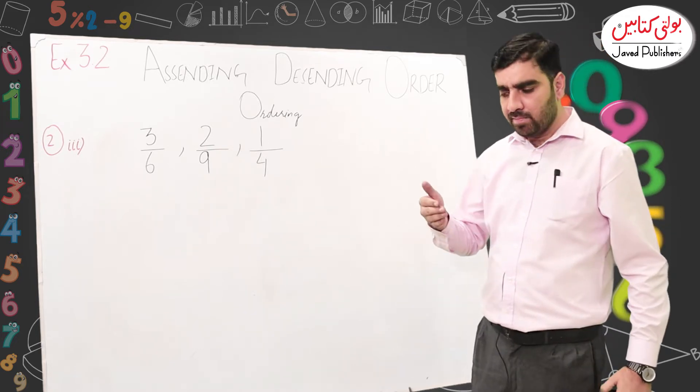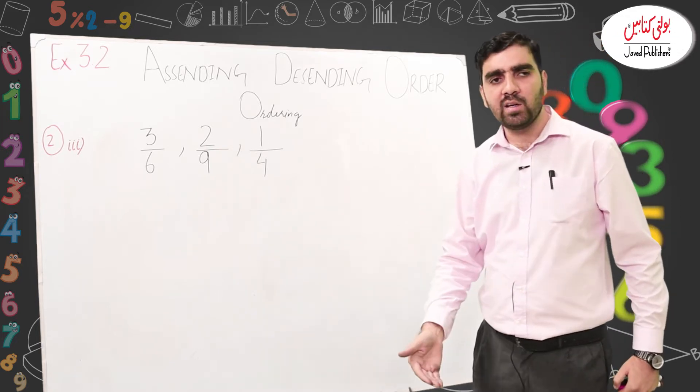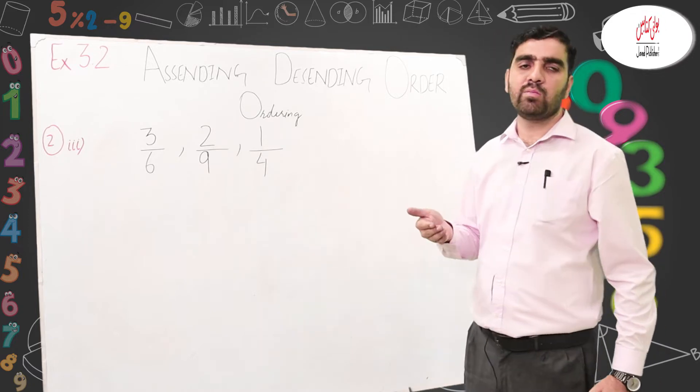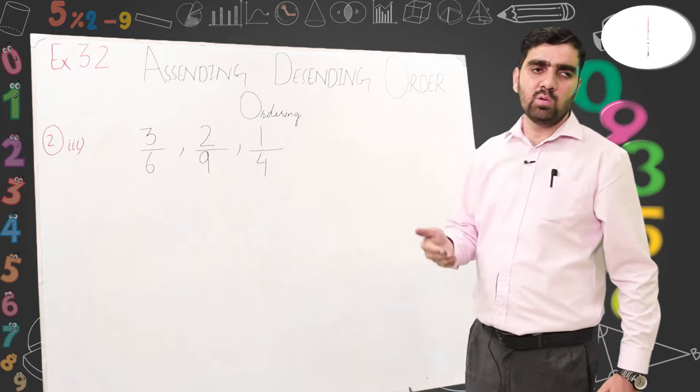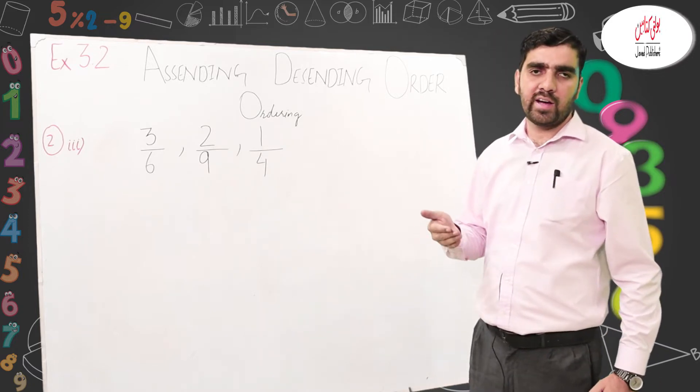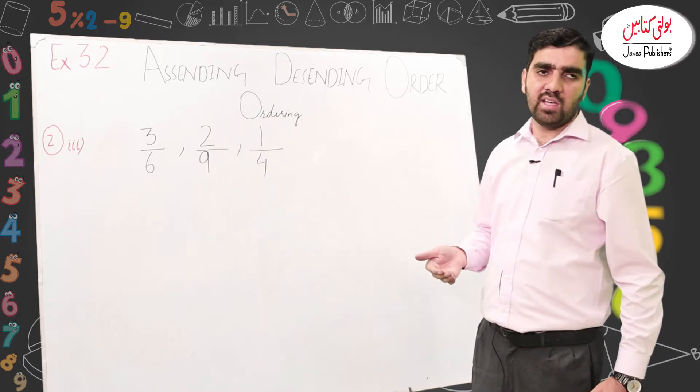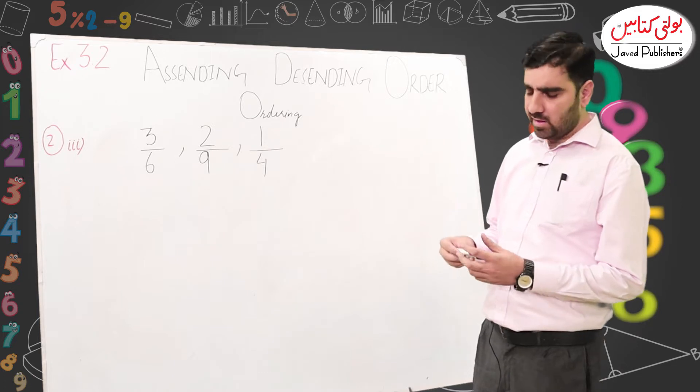Ascending order is when we move from small values to large values — like 2, 3, 4, 5, 6. This is our ascending order.